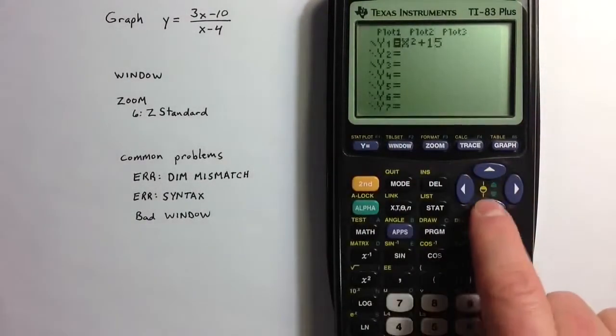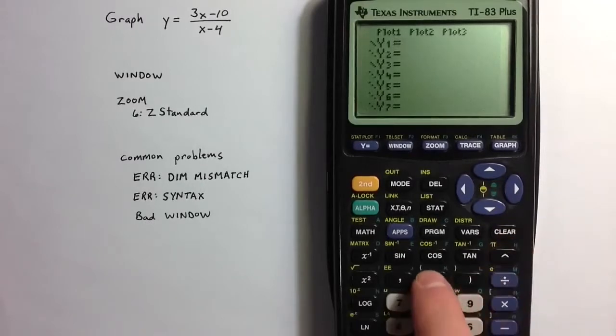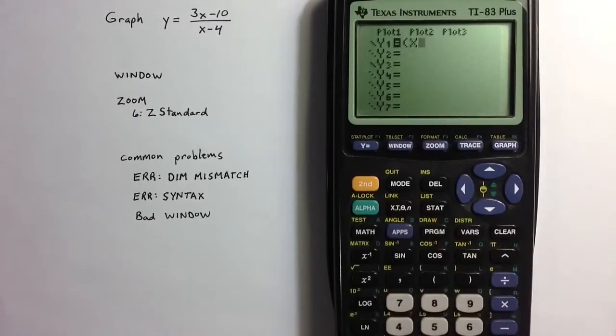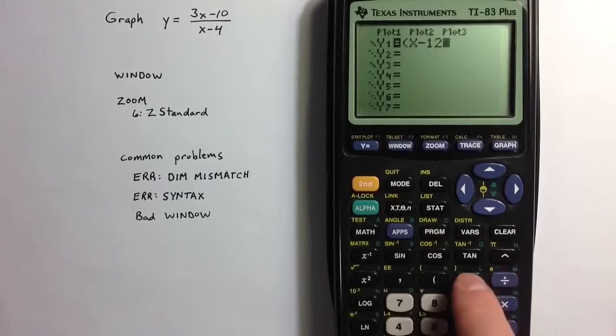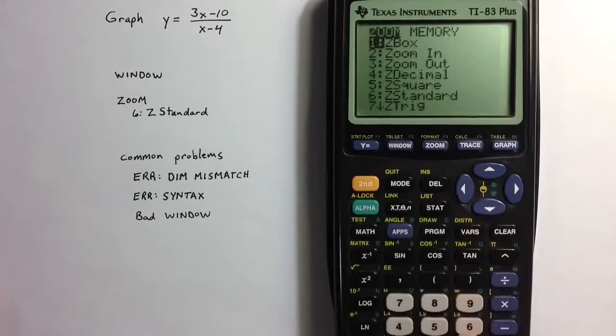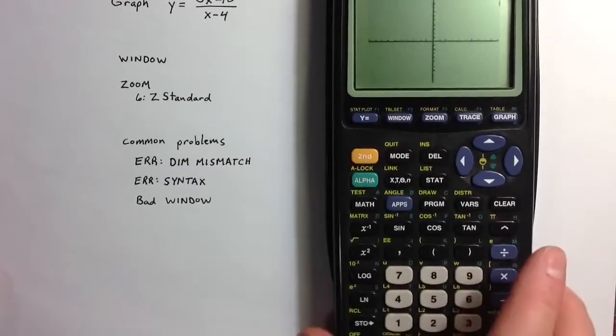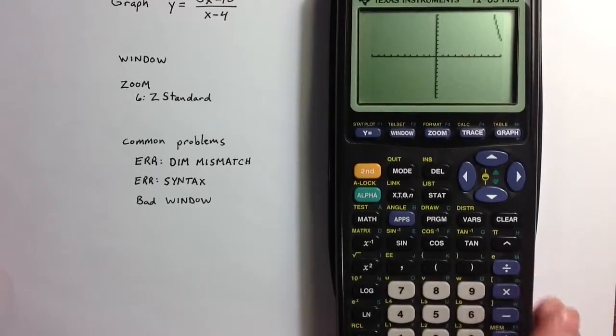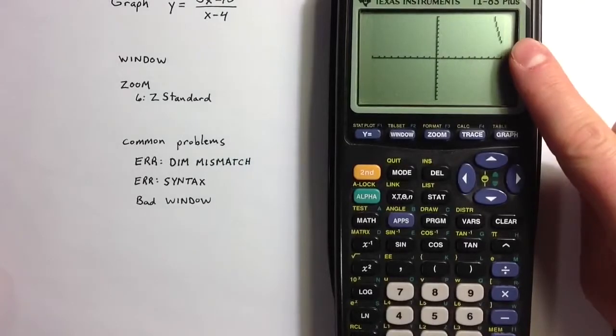In a similar way, if I wanted to graph the expression x minus 12 squared, the standard window, option 6 will show us a little piece of that graph, but not a very good piece.